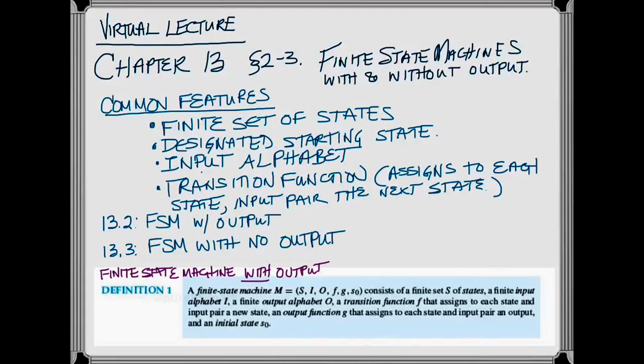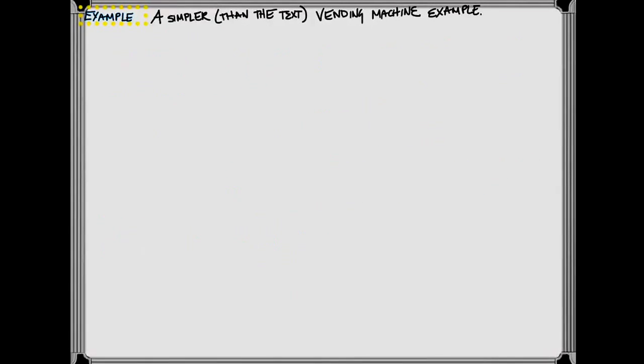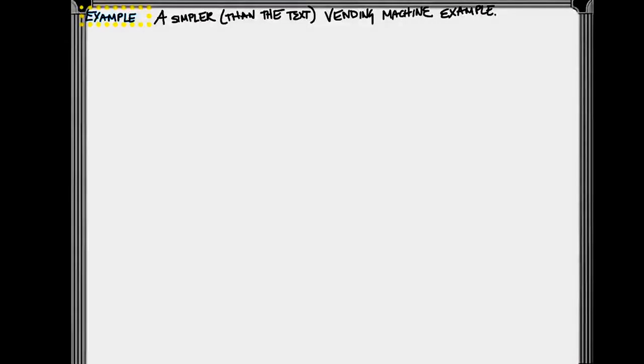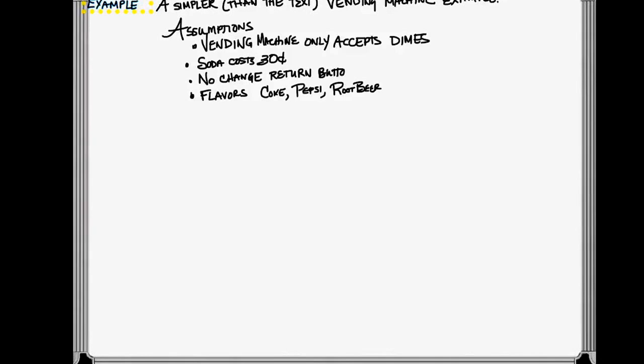To make sense out of this definition, let's actually work through an example, because I think that's the best way to see what's being said. So in this example, I want to do something that's a little bit simpler than the problem tackled by the textbook. I call this the simpler than the text vending example.